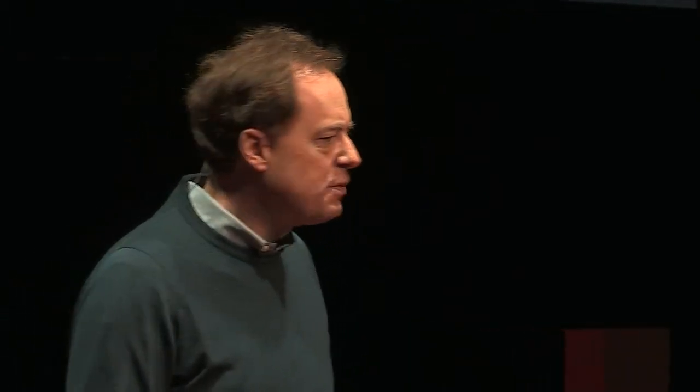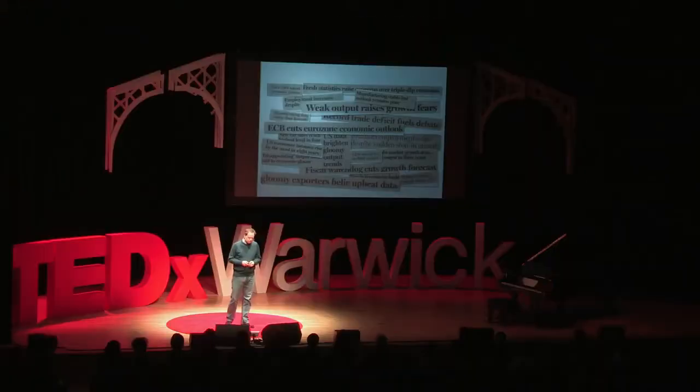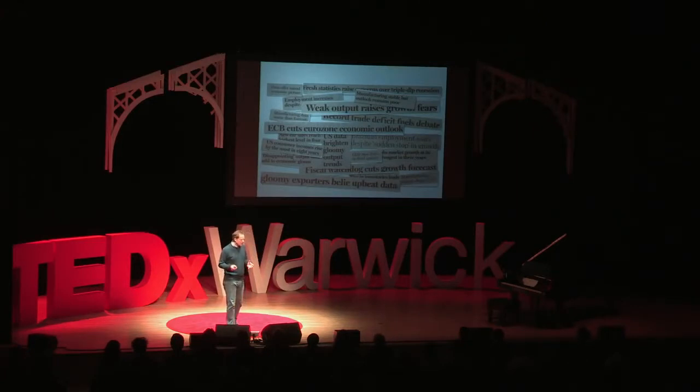However, in the last few years, a group of academics have developed a new generation of econometric models which do exactly this. Economists call this now-casting. So, how do these models work? Well, first I need to take a step back and talk a little bit more about the nature of the problem, and specifically the nature of the data that we're trying to interpret. There are two real problems: timeliness and noisiness.